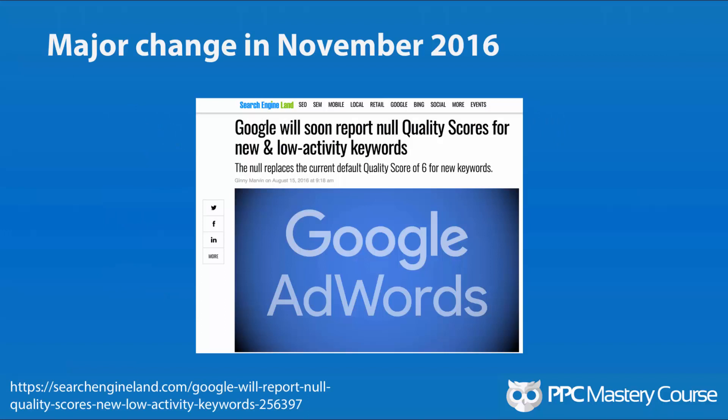Google made a major change to the way they do quality scores in November of 2016. If you have a new keyword, or if your keyword is low activity, they're not going to display a quality score at all. They used to display a quality score of six by default — now you're getting nothing. That happened in 2016, and that's why people don't see quality scores when they're first starting out or when they have new keywords they're adding to their account.